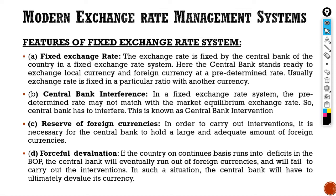Lastly, feature four: forceful devaluation. If the country on a continuous basis runs into a deficit in the balance of payment, the central bank will eventually run out of foreign currency. When the country runs into deficit, the central bank will fail to carry out the intervention since the reserves will reduce. In such a situation, the central bank will have to ultimately devalue its currency — the rate which was fixed will have to be devalued.